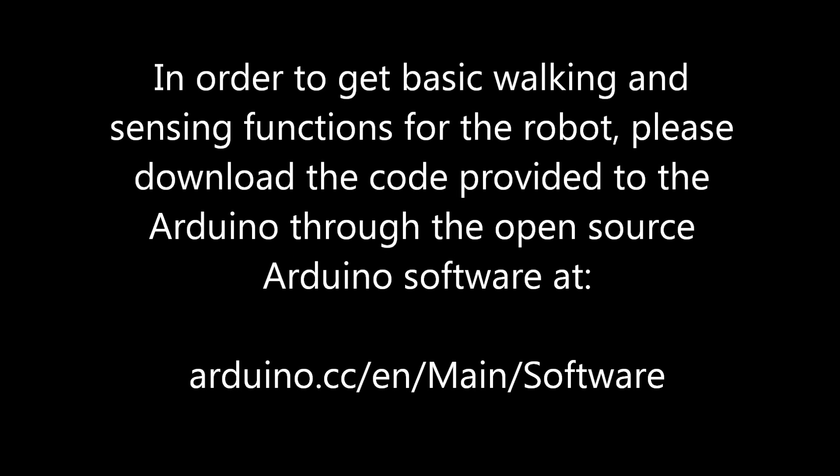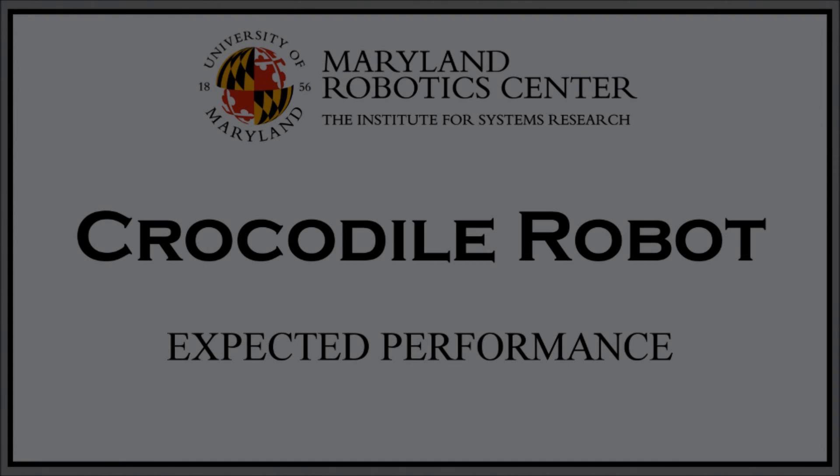In order to get basic four-legged walking, head and tail motion, and obstacle detection and avoidance, download the included code through the Arduino software, which is open source and free on the Arduino website, onto the card using a USB cable appropriate for the card. A right angle USB-B adapter might prove useful for reaching into tight spaces.